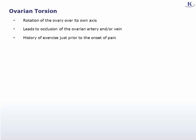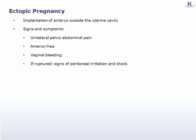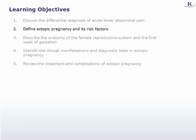Another cause of lower abdominal pain is ovarian torsion, which refers to the rotation of the ovary over its own axis, leading to occlusion of the ovarian artery and/or vein, eliciting pain on the affected side. There is usually a history of exercise just prior to onset of pain. In ectopic pregnancy, implantation of the embryo occurs outside the uterine cavity. It presents with unilateral pelvic or abdominal pain, amenorrhea, and vaginal bleeding. When ruptured, symptoms include signs of peritoneal irritation and shock.